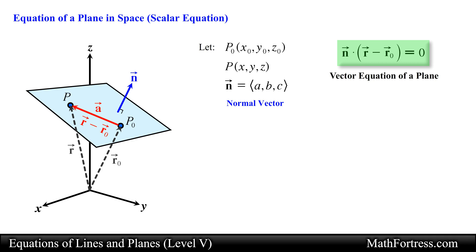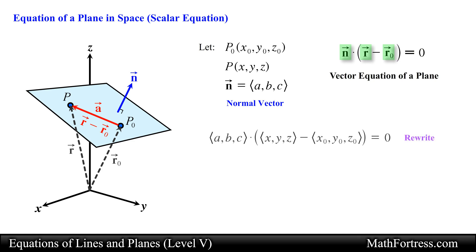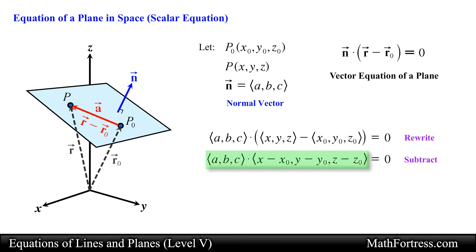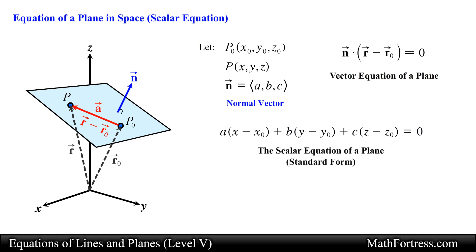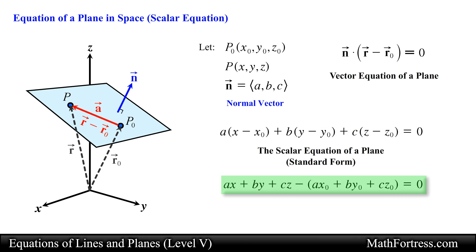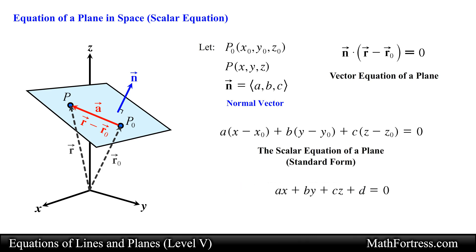Starting with the vector equation of a plane, let's rewrite each vector in component form. We then subtract vector r and vector r0 component wise, and compute the dot product using the algebraic definition. This form is referred to as the scalar equation of a plane in standard form. We can rewrite this equation by distributing the constants a, b, and c and regrouping terms. We can then replace the negative expression in parenthesis with the constant d, since it simplifies to a constant.